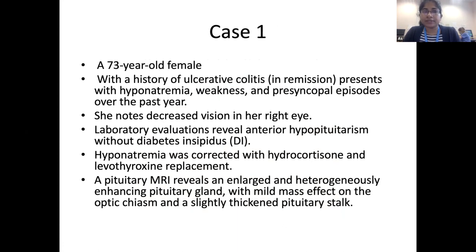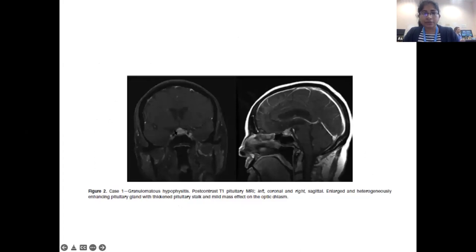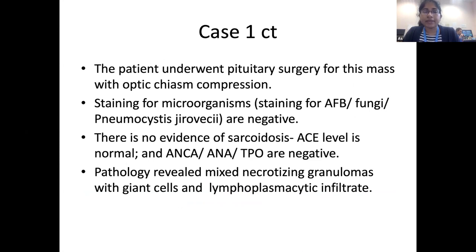Case 1: A 73-year-old female with a history of ulcerative colitis in remission presented with hyponatremia, weakness, and presyncopal episodes for one year, with decreased vision in her right eye. Investigations revealed anterior hypopituitarism without DI. Hyponatremia was corrected with hydrocortisone and levothyroxine. Pituitary MRI revealed an enlarged, heterogeneously enhancing pituitary gland with mild mass effect on the optic chiasm and thickened stalk. Due to mass effect she underwent surgery, and pathology revealed mixed necrotizing granulomas with giant cells and lymphoplasmacytic infiltrates — a mixed-type necrotizing granulomatous hypophysitis, a very rare condition.